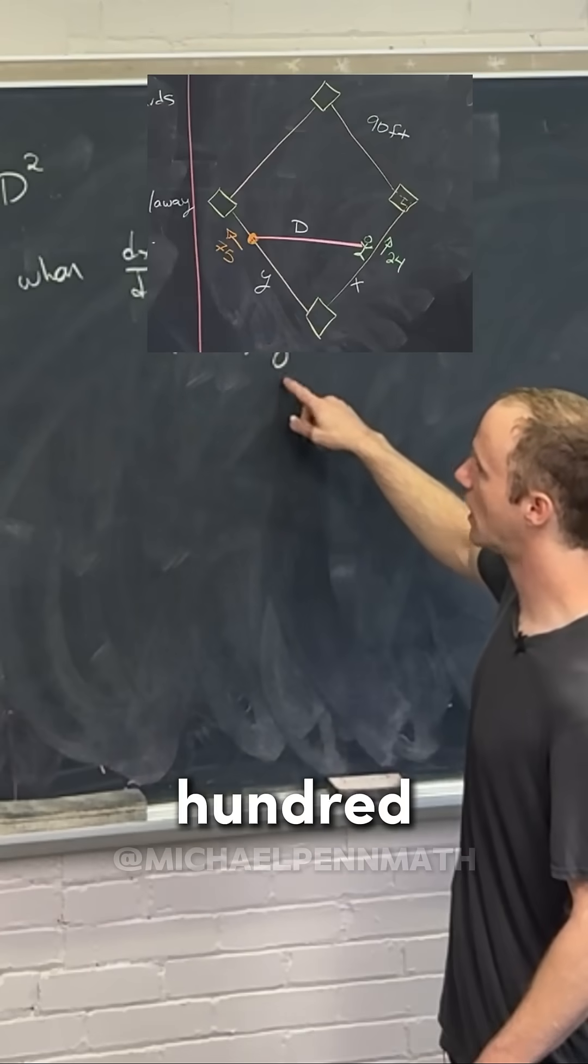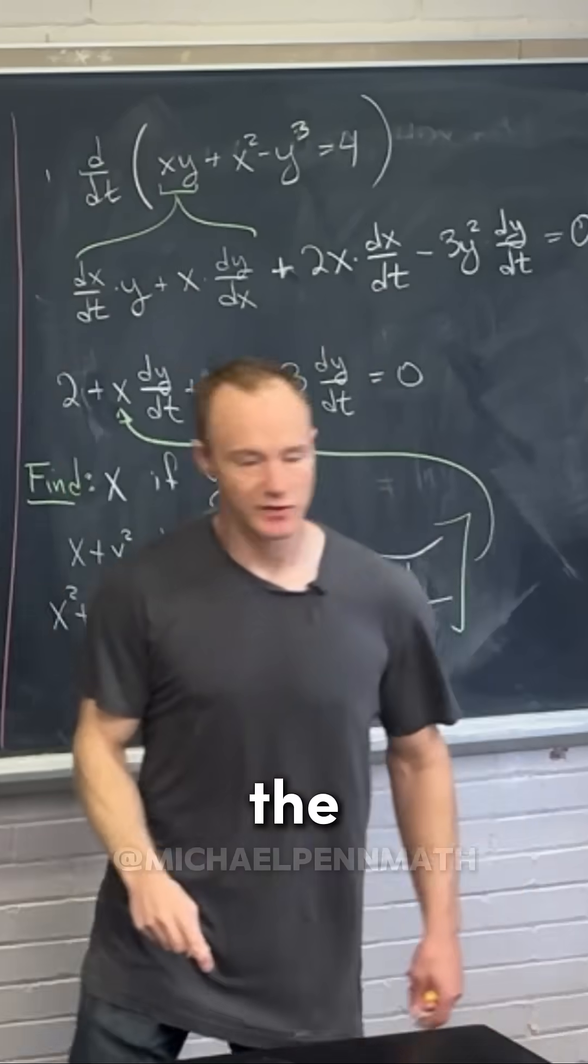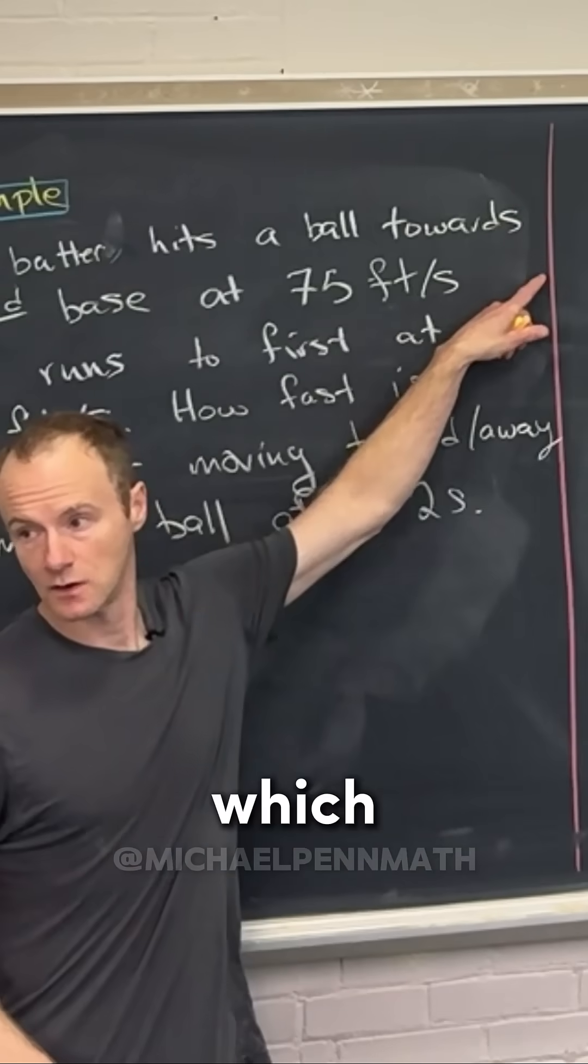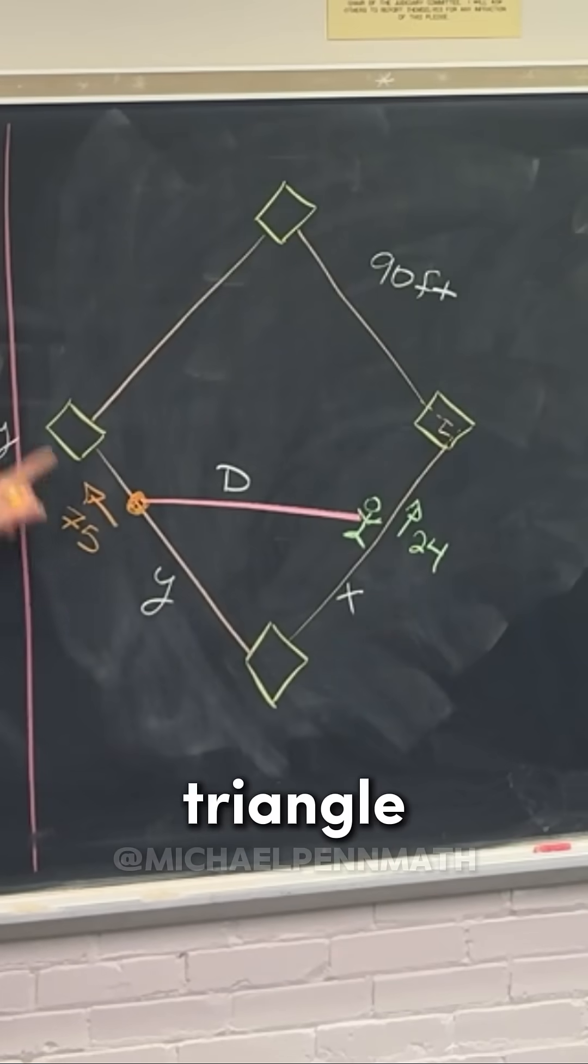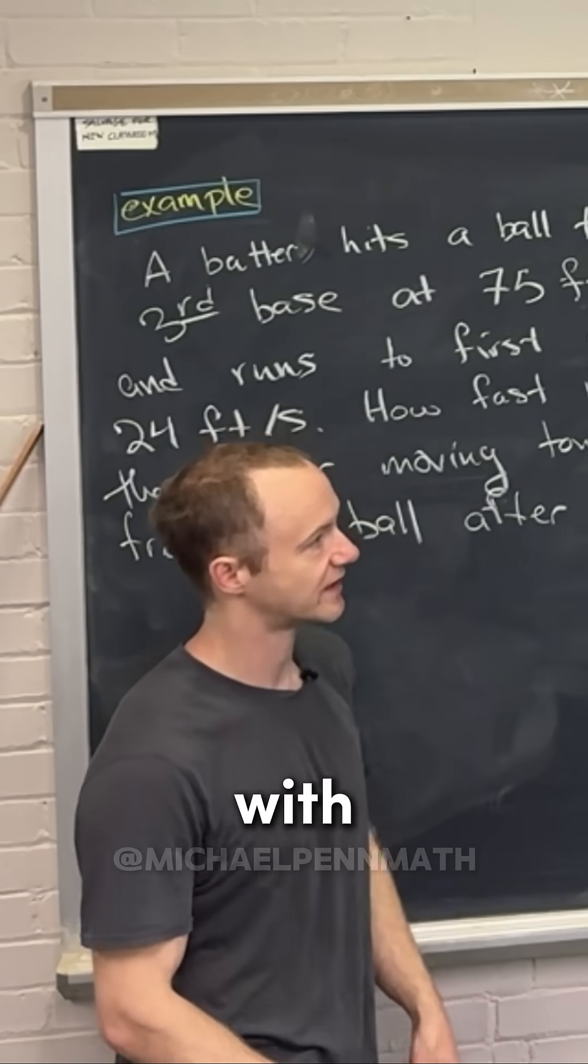y is equal to 150, so the ball is actually somewhere out here. Don't worry, there's no problem with that because it still makes a right triangle. Now we have all our parts and we're ready to take this x squared plus y squared equals d squared.